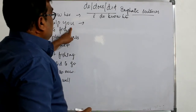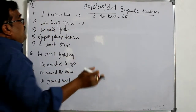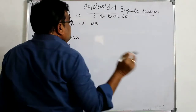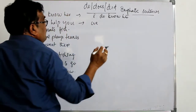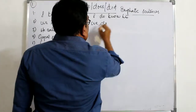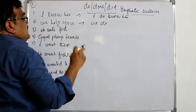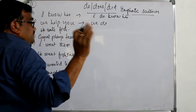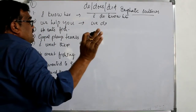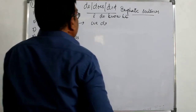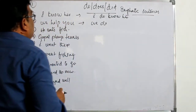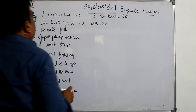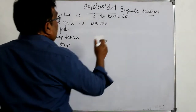'We help you' — this sentence is in simple present tense, so we must use do. For I, we, and plural subjects we use do. The emphatic sentence becomes: 'We do help you.'